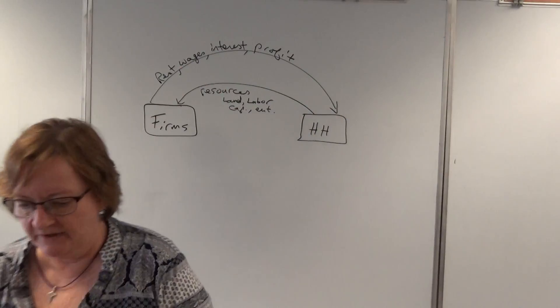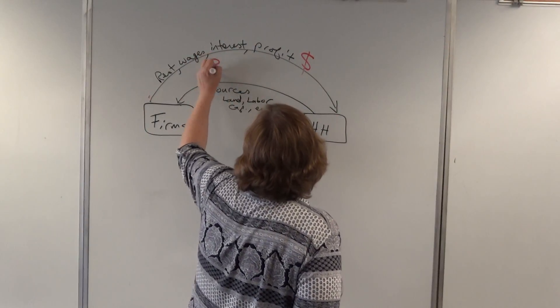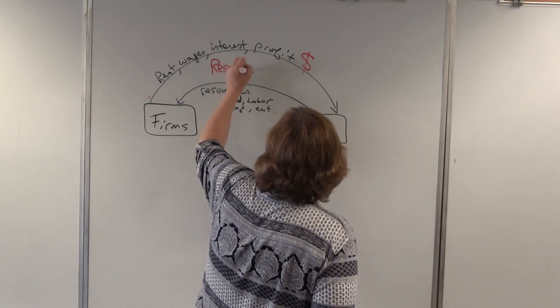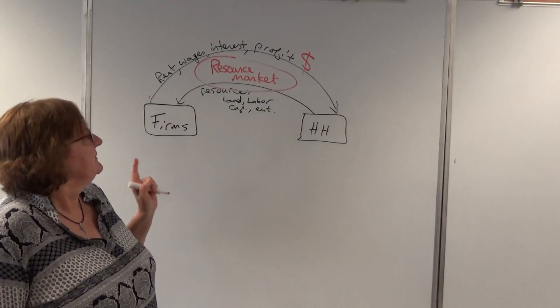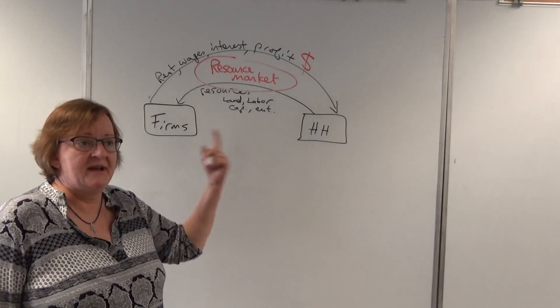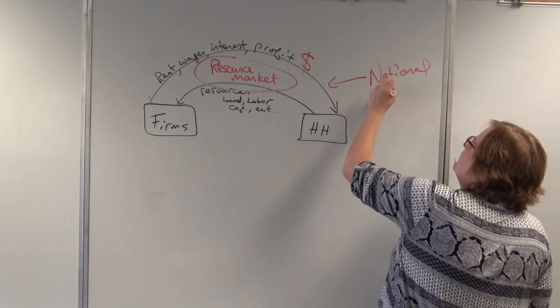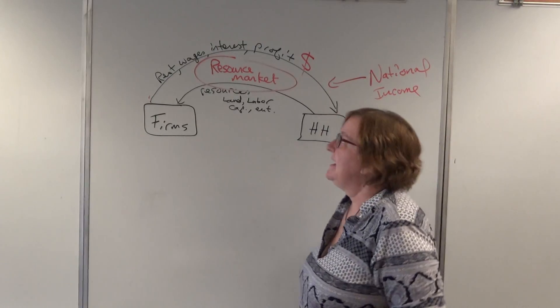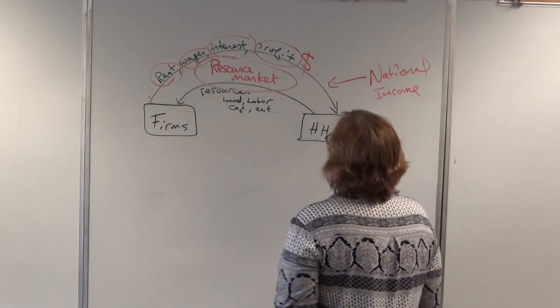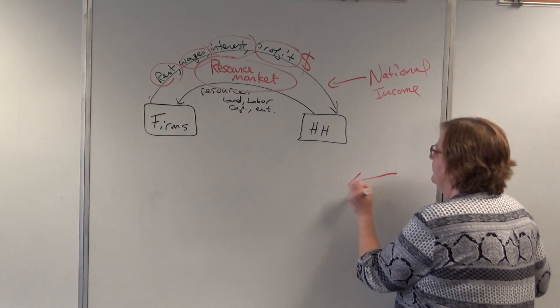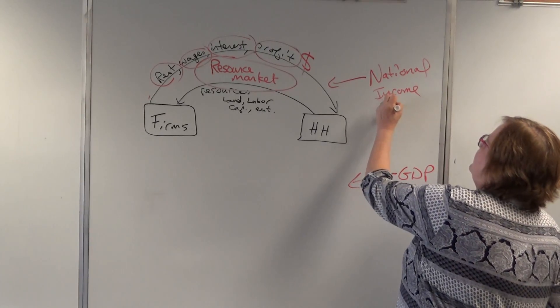Okay. And this market, what did we call it? Let me get a different color pen here. This was the dollar flow. This one here, right? This was the resource or the factor market. Depending upon your textbook, resource or factor market. GDP is not produced, is not counted there. National income is counted here in the resource market. And, literally, it's the sum of the rent, the wages, the interest, the profits. That's national income.